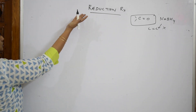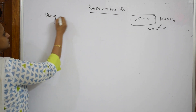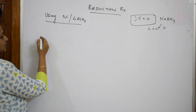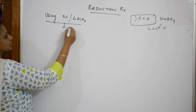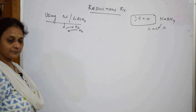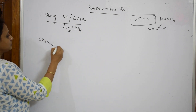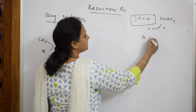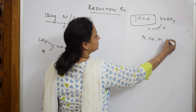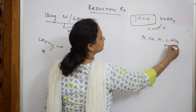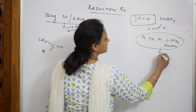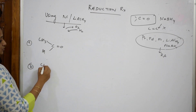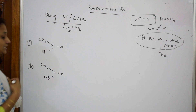Let me start with the first one. I am going to show the reduction reaction using nickel catalyst and lithium aluminium hydride as a reducing agent. Its role is to either remove oxygen or add hydrogen. I am going to take an aldehyde, and also pick up a ketone: CH3COCH3.